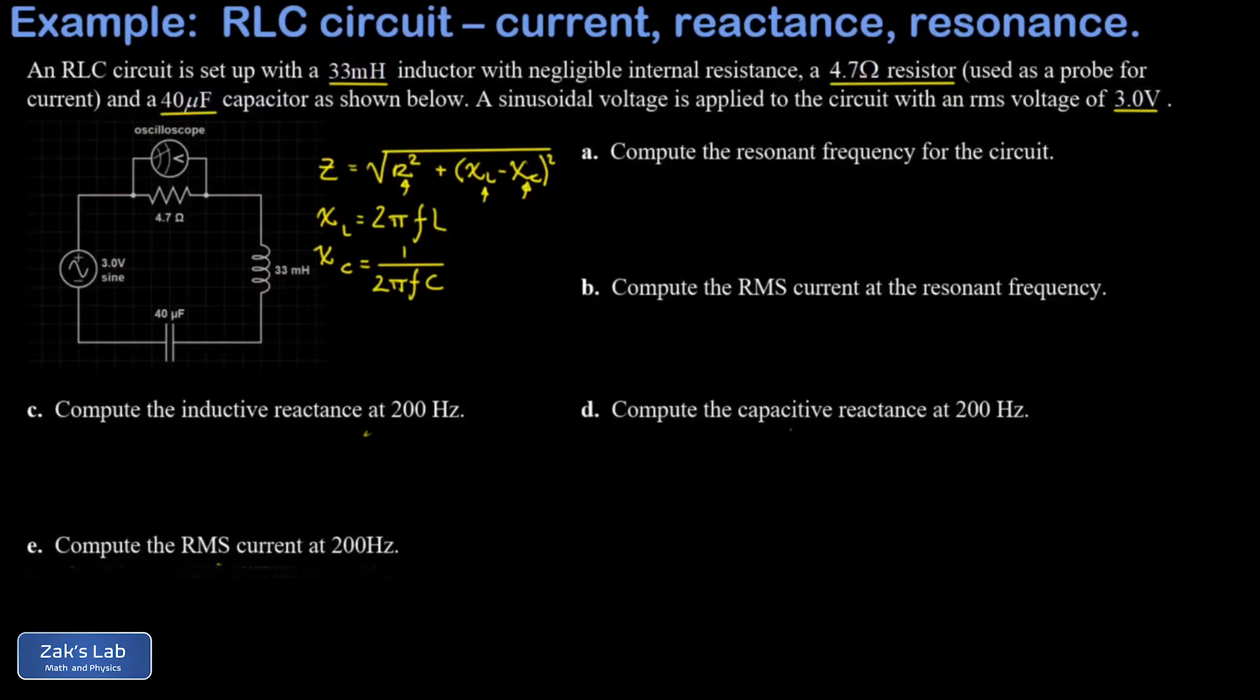The idea behind the resonant frequency for an RLC circuit is that there's one special frequency for which the capacitive and inductive reactances are equal. That makes this part of the impedance term vanish. It makes the impedance its minimum possible value, and you get the maximum possible current.